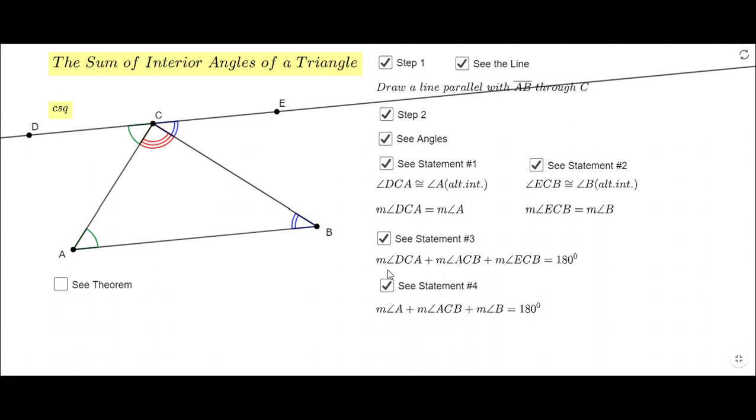Where I replace the measure of angle DCA with the measure of angle A, because they are equal, to see it here. And also the measure of angle ECB, I replace to angle B, because they are equal. And you see now we have this statement: the measure of angle A plus the measure of angle ACB, this is the original angle C, plus the measure of angle B equals 180. So this is a short way to prove this theorem: the sum of the interior angles of a triangle is 180 degrees.